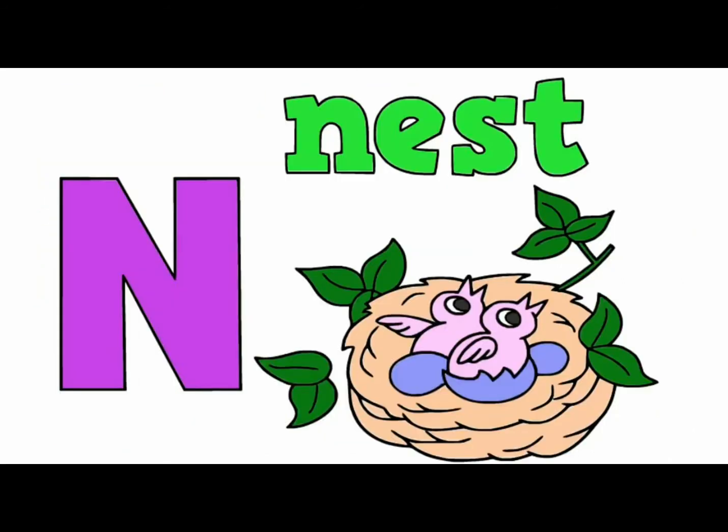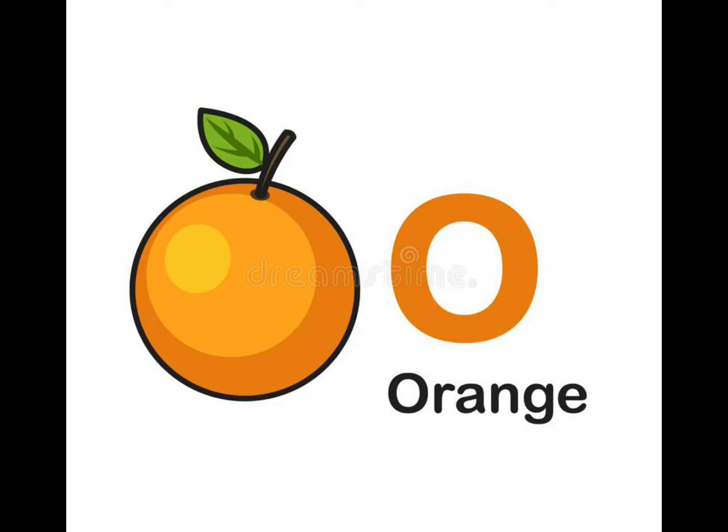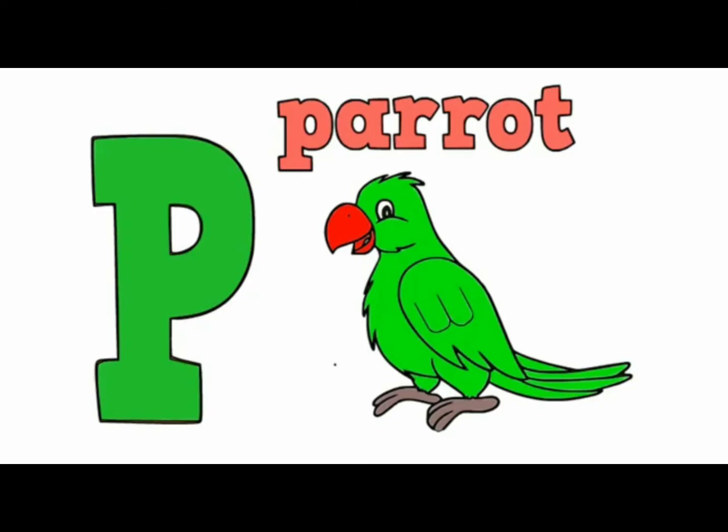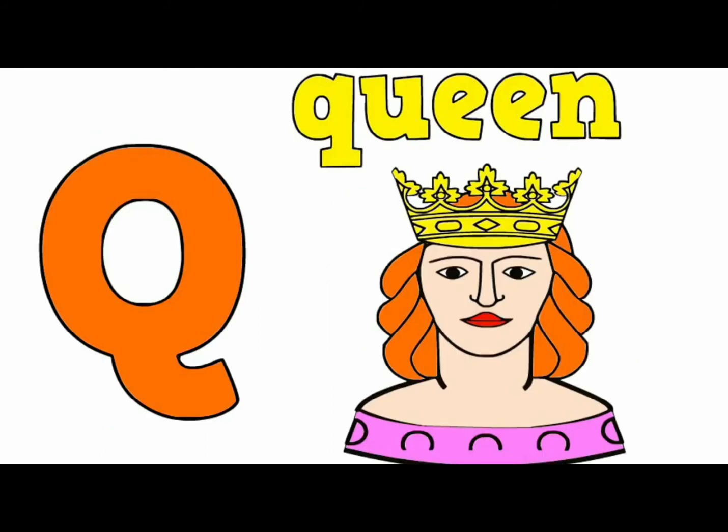M is for monkey, N is for nest, O is for orange, P is for parrot, Q is for queen.